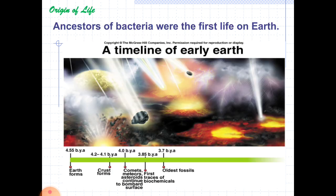The introduction to microbiology starts from the origin of life, as the first life on earth is an ancestor of bacteria. Here is a picture of a timeline of early earth being bombarded with comets and meteorites. The earth formed around 4.55 billion years ago and this hot ball of fire cooled to form an innermost crust around 4.2 to 4.1 billion years ago. Gradually it developed to form a hard surface, which was constantly bombarded with comets, meteoroids, and asteroids.